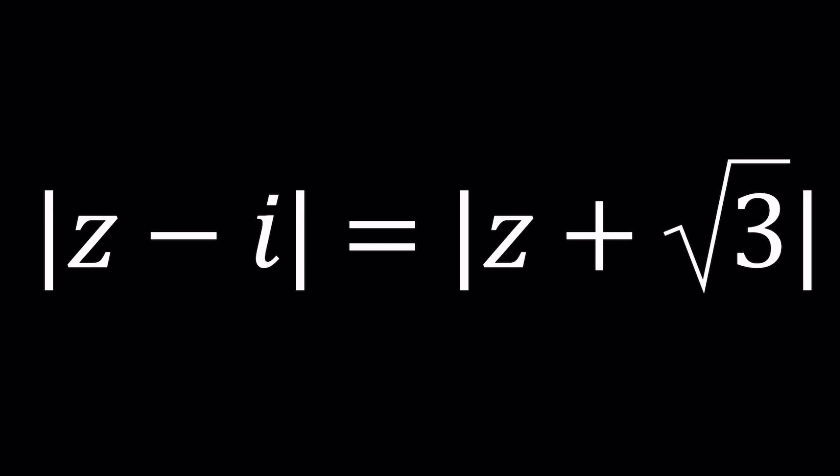Hello everyone, welcome to A plus BI. This channel is all about complex numbers, and in this video we're going to be solving a locus problem with complex numbers. What does that mean? It means that we're looking for a set of complex numbers that satisfy a certain criteria, such as this one. We want our z, which is a complex number, to satisfy this equation, which is the absolute value of z minus i equals the absolute value of z plus root 3. We're going to be looking at this problem from two different angles, and let's go ahead and start with the first one.